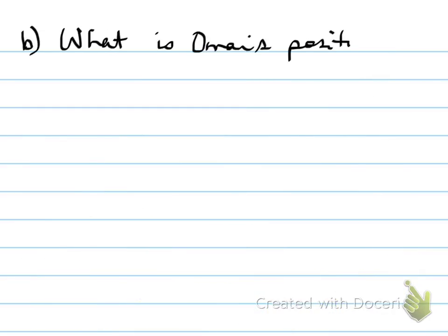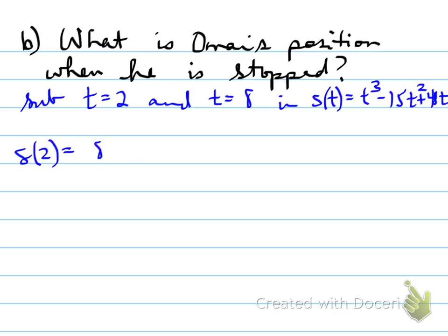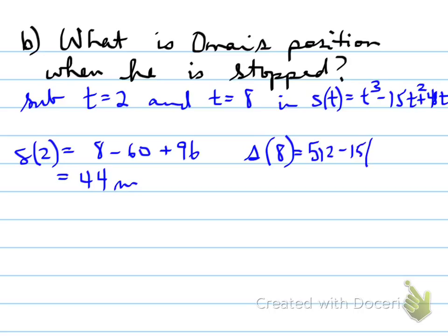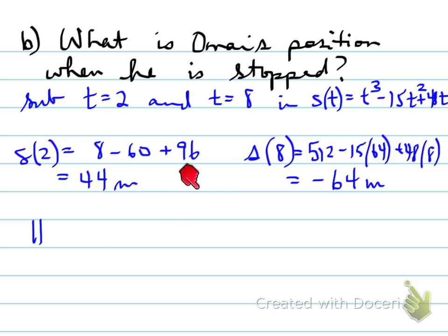Part B: what is Omar's position when he is stopped? We sub t equals two and t equals eight into the position equation. S at two gives 44 meters, and S at eight gives negative 64 meters. A negative position means he's in the opposite direction from where he started. If right is positive, 44 meters means he moved 44 meters to the right, and negative 64 means he moved 64 meters to the left.